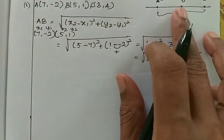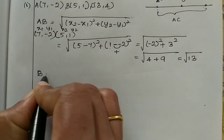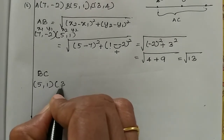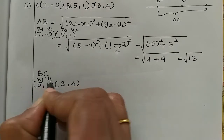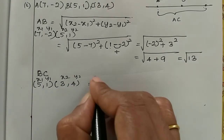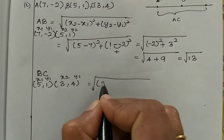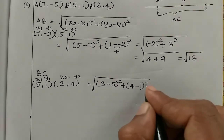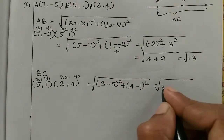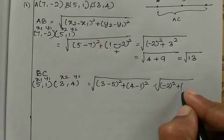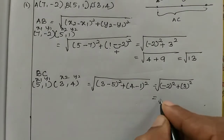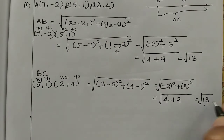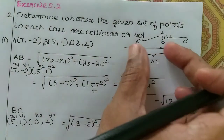Now BC distance: root of (x2 is 3 minus x1 is 5) the whole square, plus (y2 is 4 minus y1 is 1) the whole square. So 3 minus 5 is minus 2, the whole square, plus 4 minus 1 is 3, squared. So 2 squared is 4, plus 3 squared is 9, which equals root 13.